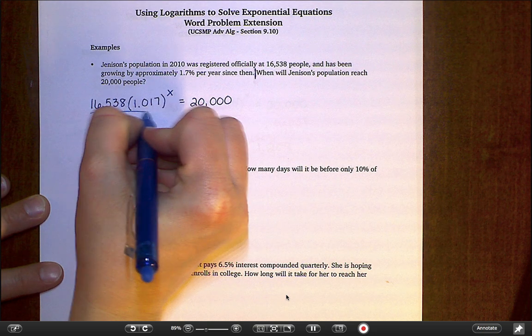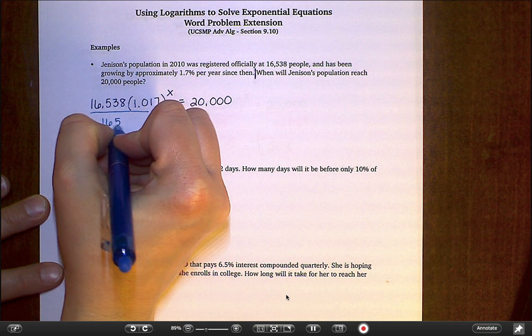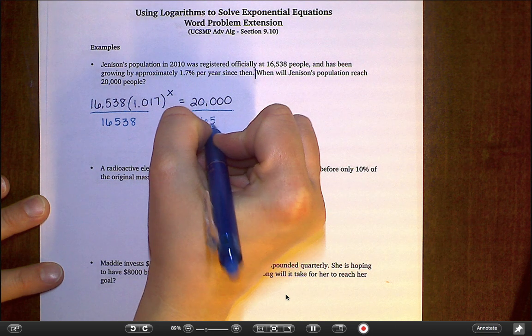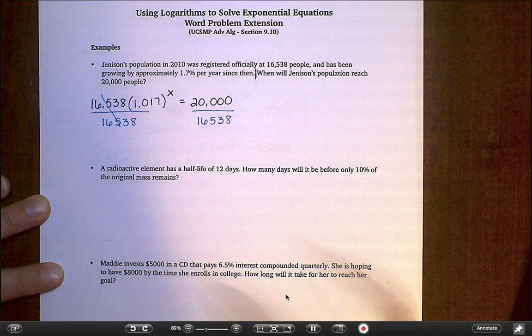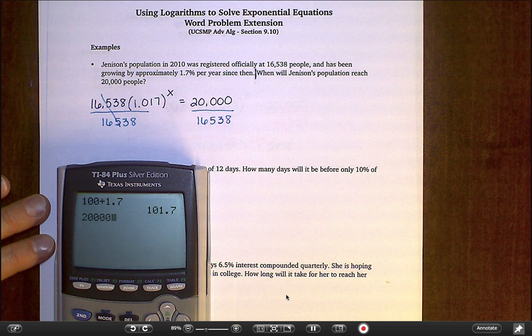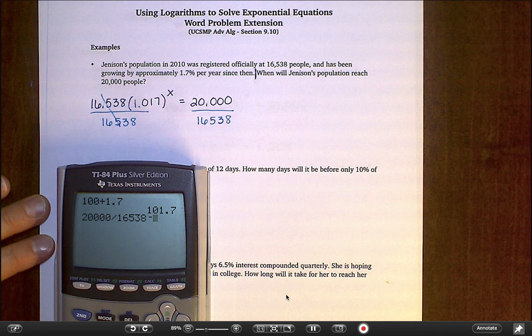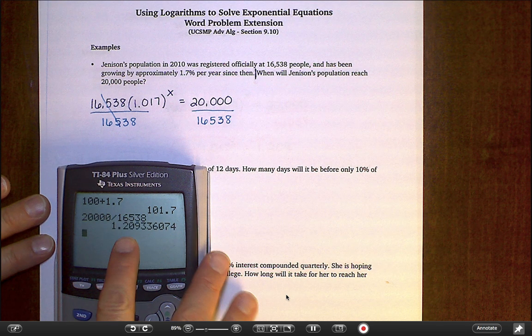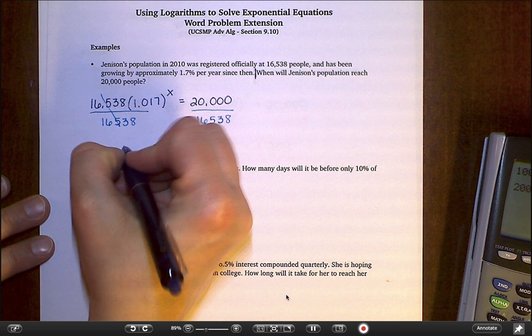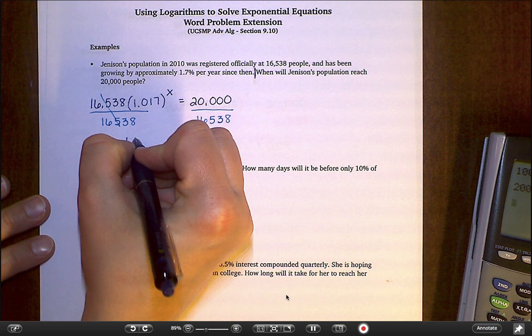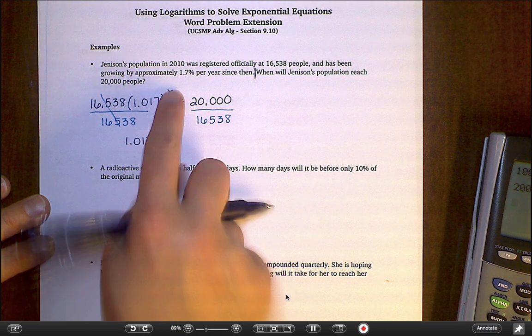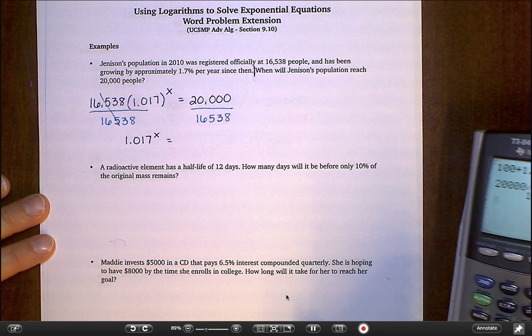So thinking back to what we did yesterday with 9.10, first thing I want to do is isolate this exponential piece, which is the 1.017 to the power of x. So I'm going to start by dividing away that 16,538. And this is going to give me a messy decimal, because real life numbers are always messy. So I'm going to do 20,000 divided by 16,538. And I get this 1.209 number, which I'm going to write down in its rounded form for right now. But when I actually go to do some math with it in a second, I'm going to try hard to keep the whole decimal intact as best I can.